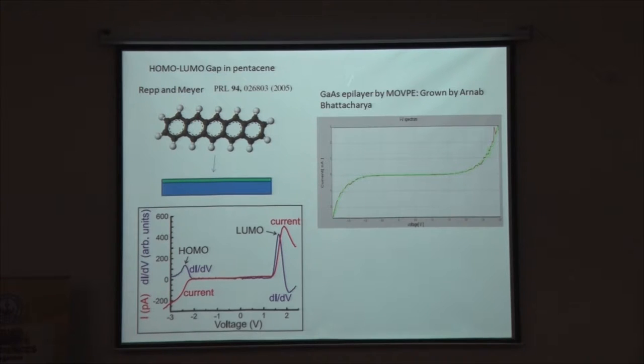Similarly, for example, this is a gallium arsenide epilayer. You can see here the tunneling current is zero and here it picks up, and this gives you the gap, the semiconducting gap of gallium arsenide.